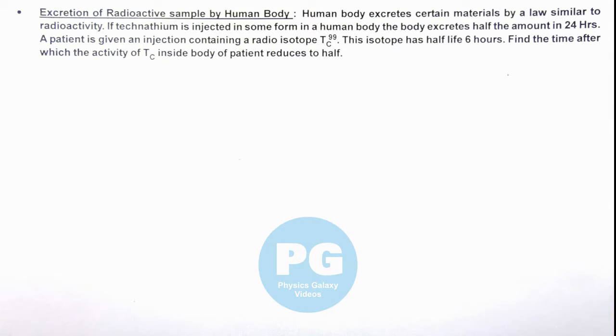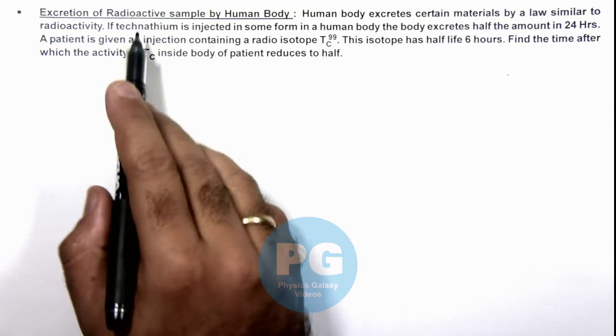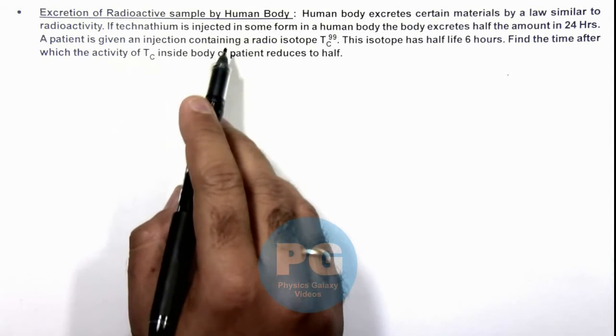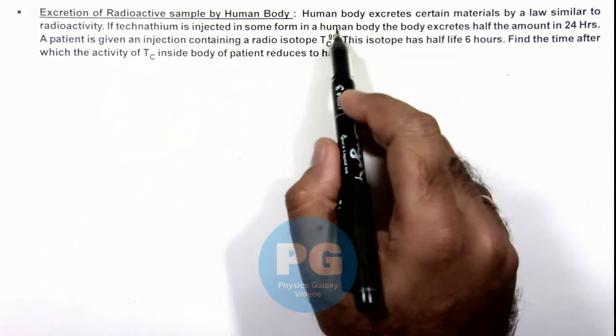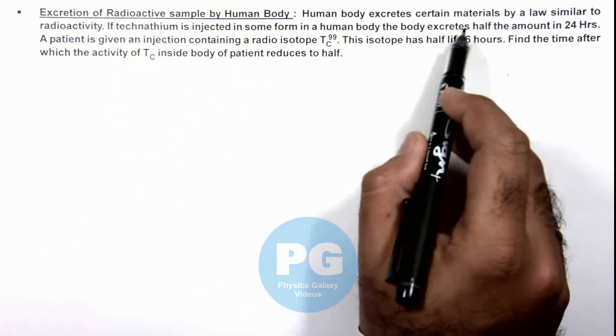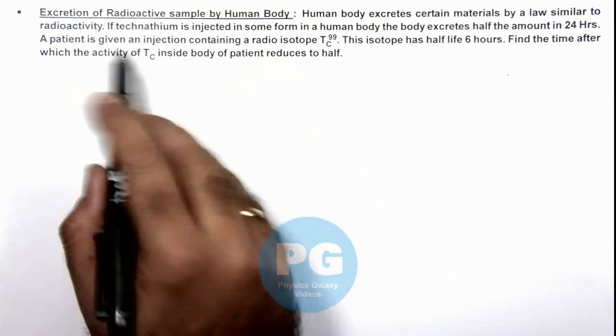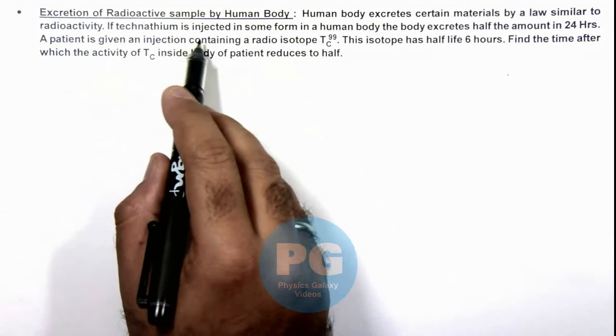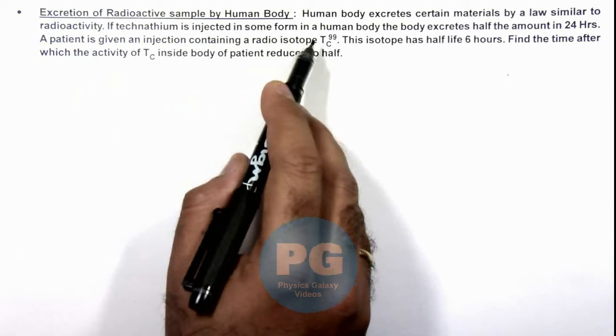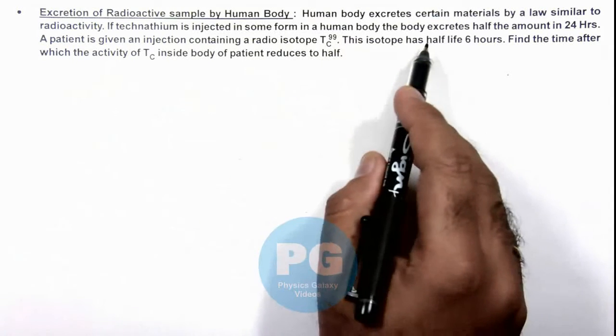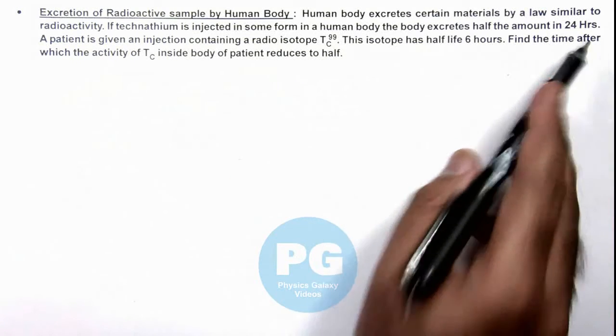In this illustration we'll analyze the excretion of a radioactive sample by human body. Here we are given that human body excretes certain material by a law similar to radioactivity. If technetium is injected in some form in a human body, the body excretes half the amount in 24 hours.